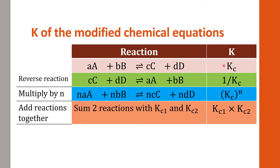If we reverse the previous equation so that CD becomes the reactant and AB becomes the product, the Kc for this reverse reaction in comparison to the previous one is simply the inverse value. So the reverse reaction has Kc equal to 1 over Kc.